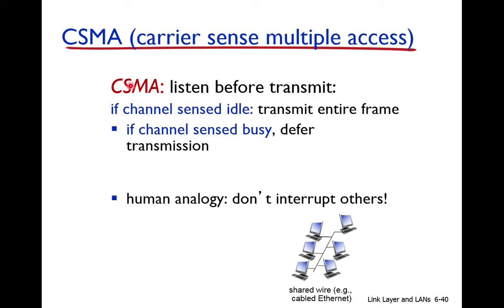What is the motive of CSMA and how does it work? Carrier sense means that before transmitting the data, the node listens to the medium. Carrier sense means the medium is sensed — the node listens to see if someone is transmitting the data. Before transmitting, this node will sense the medium. If someone is transmitting, it means the medium is busy.